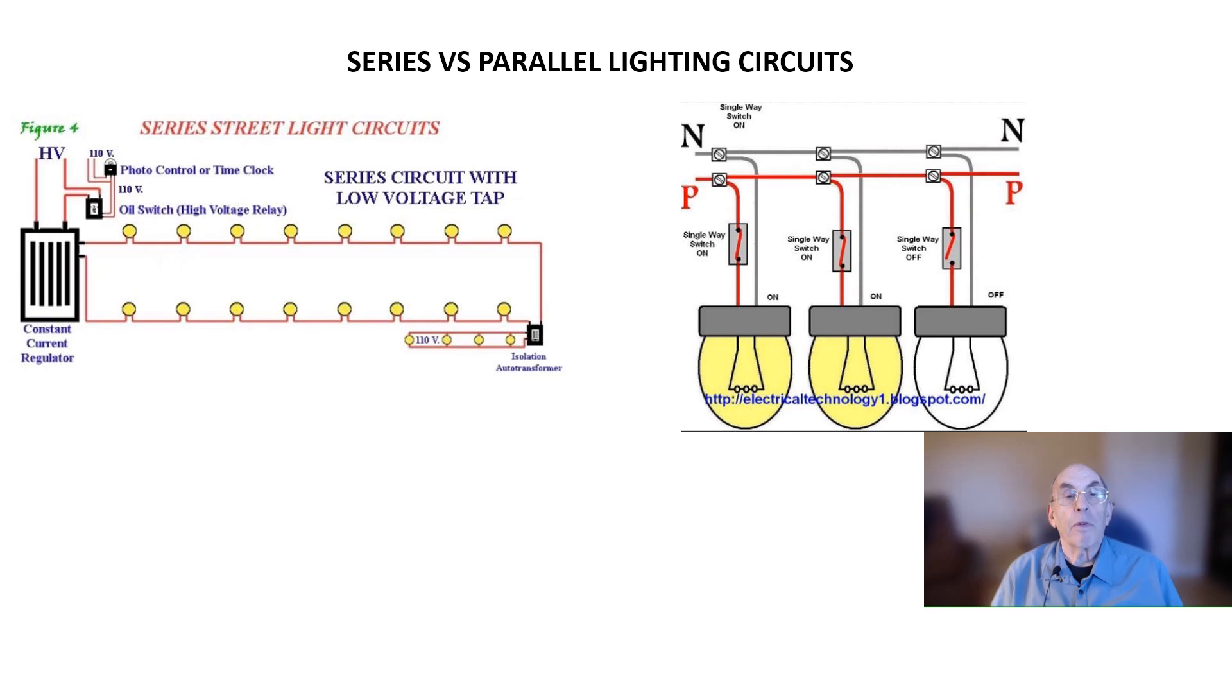Let's briefly review the difference between series and parallel lighting circuits. In the series circuit shown on the left, the same current flows through each lamp. Since each high-pressure sodium lamp in that circuit requires about 50 volts across its terminals to operate properly,